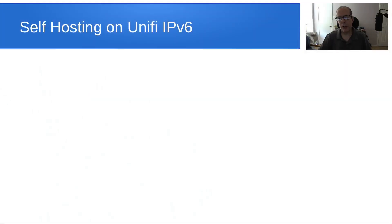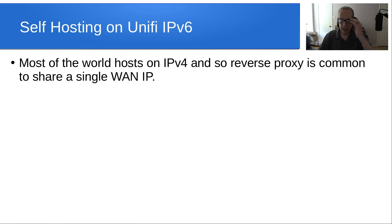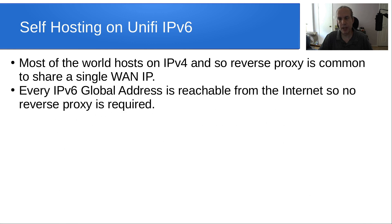Welcome back. Today we're going to discuss self-hosting on Ubiquiti Unify routers via IPv6. Most of the world hosts on IPv4, and reverse proxy is common to share a single WAN IP address. Every IPv6 global address is reachable from the Internet, so no reverse proxy is required.